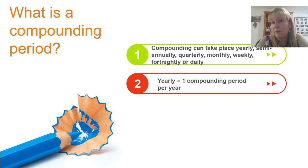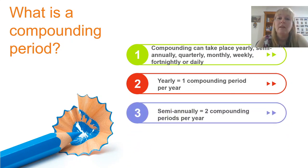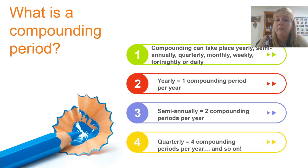If our problem is done as a yearly compounding problem, that means we have one compounding period per year. For semi-annually it means we have two compounding periods per year. For quarterly it's four compounding periods per year and so on depending on our type of compounding.